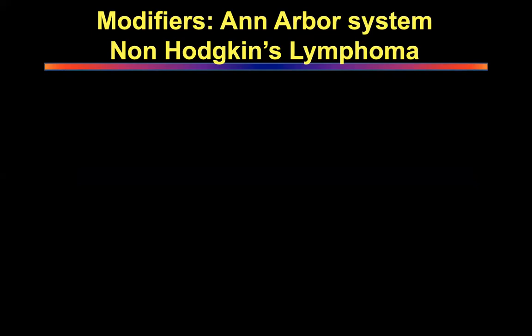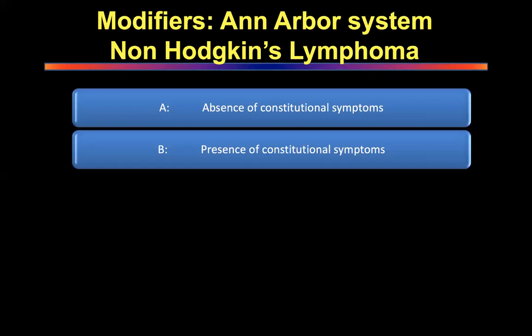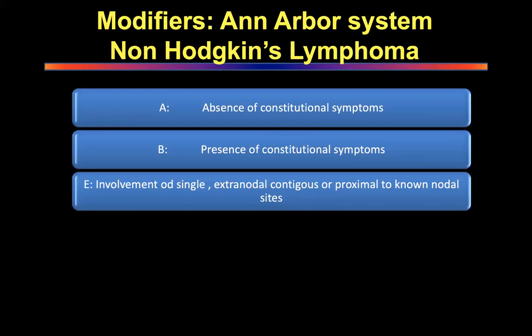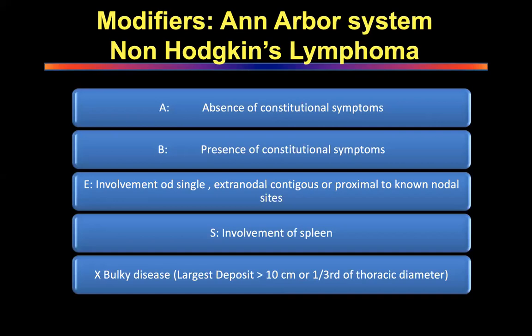Ann Arbor modifiers: A is absence of symptoms; B is presence of symptoms; E is involvement of a single extranodal contiguous or proximal to nodal site; S is splenic involvement; and X denotes bulky disease — a large deposit more than 10 centimeters or more than one-third of the thoracic diameter.